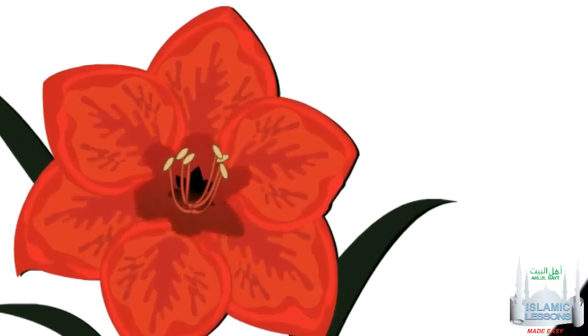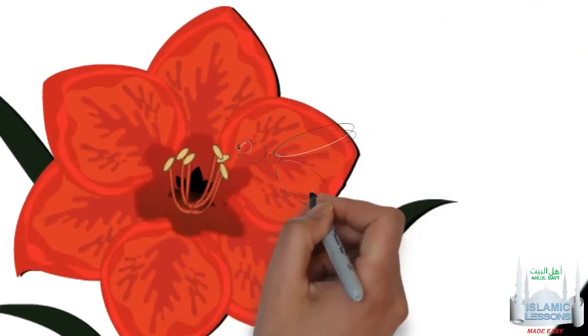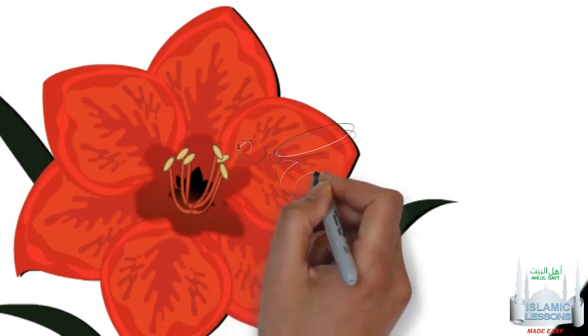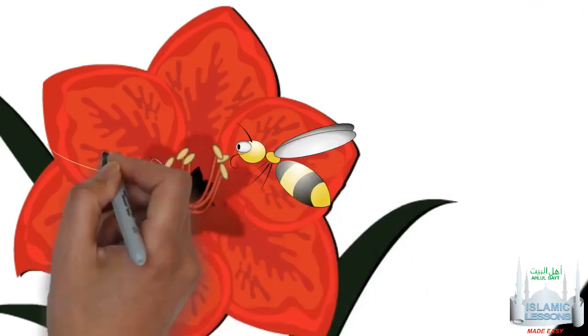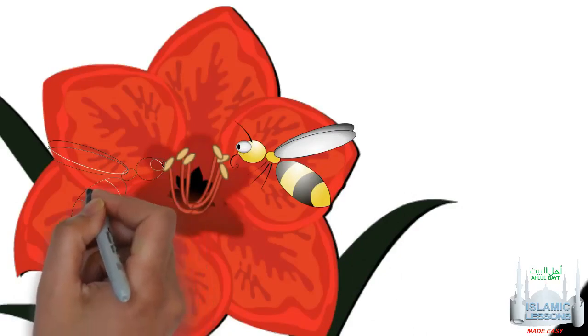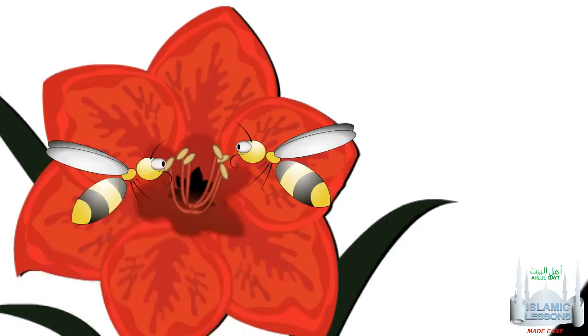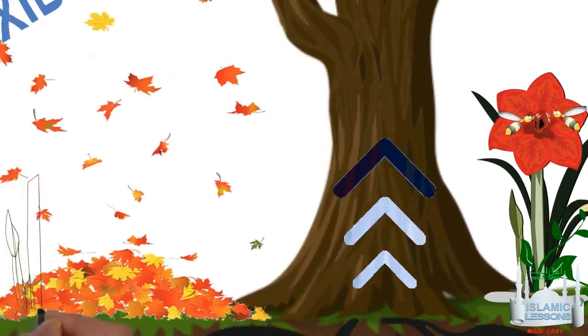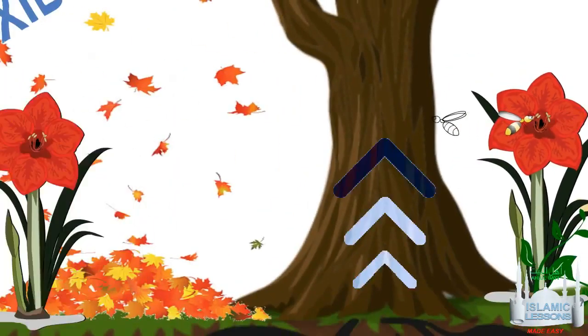Bees feed on the nectar and pollen of flowers. Worker bees land on the flowers and drink their nectar. The nectar is stored with the bee. In the process of doing this, bees become covered in pollen. When bees fly from one flower to another, pollen is spread from plant to plant.